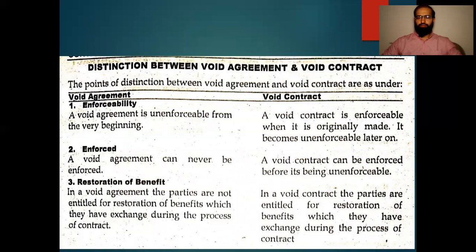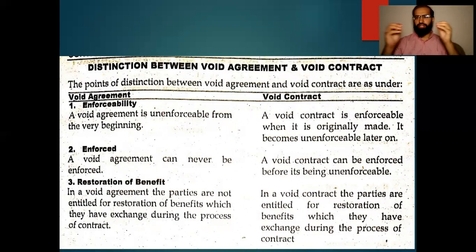This is our first unit which is completed. We will now differentiate some terms because there is some ambiguity among students about void agreement and void contract. A void agreement is unenforceable from the very beginning — you cannot enforce it in court at the time of the agreement. A void contract, at the time of agreement, is not void, but after that it becomes unenforceable due to government policy or government restrictions. A void agreement can never be enforced, but a void contract can be enforced before it becomes unenforceable.